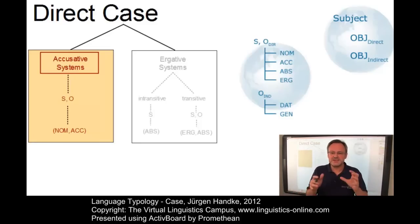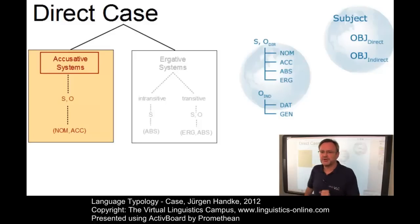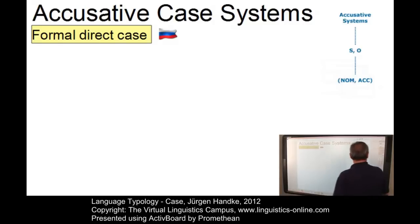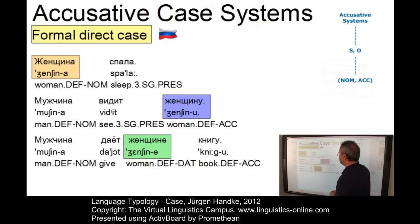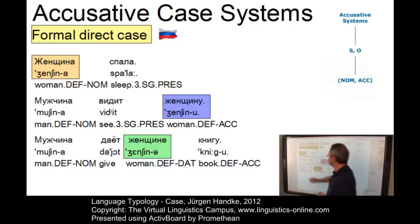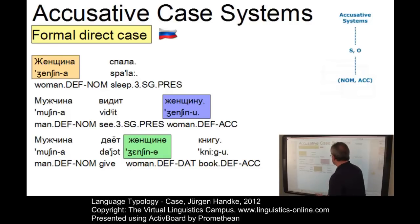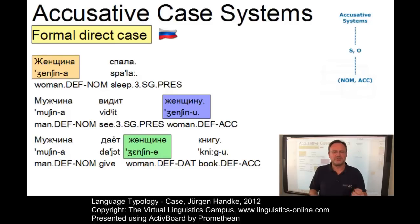Let us look at the main variants of the accusative case system. The first is a language with formal direct case distinction — Russian. With the three sentences: the woman is sleeping, the man sees the woman, the man gives the woman the book. We have three forms: Genshinna, Genshinnu, and Genshinne — clearly showing a formal case distinction in terms of different suffixes.